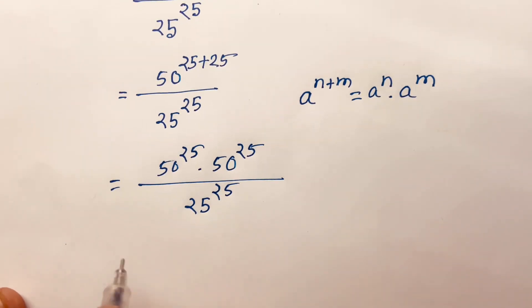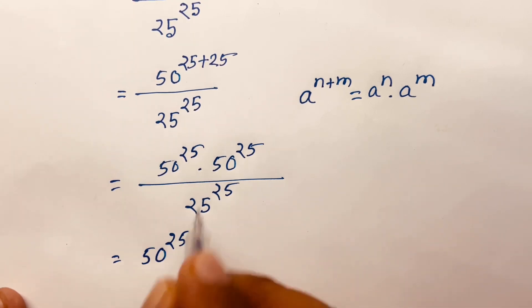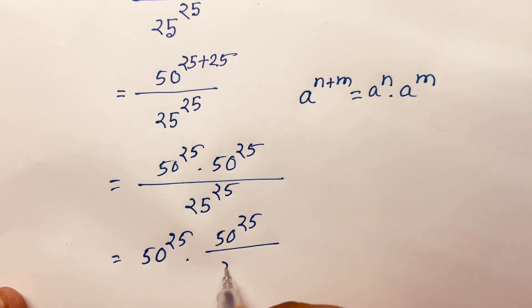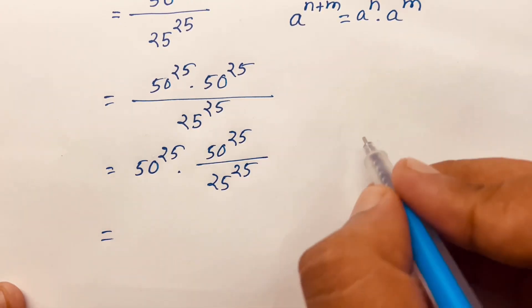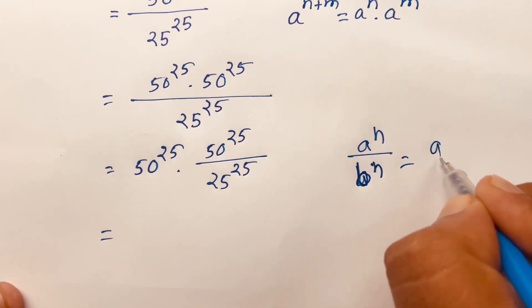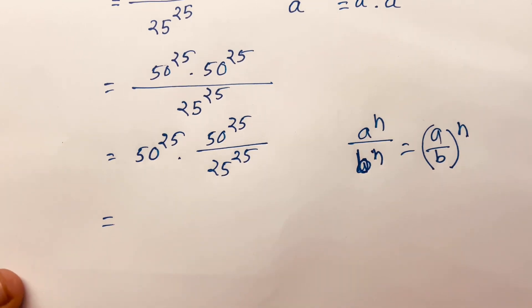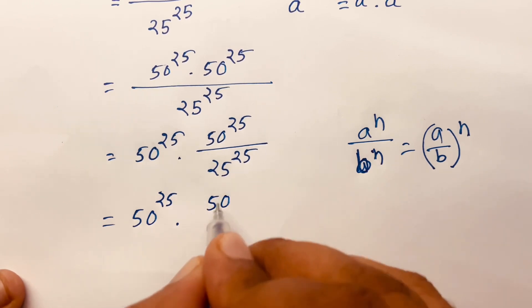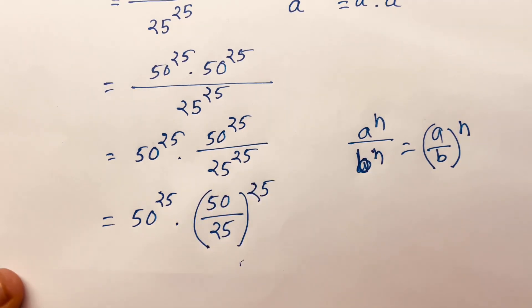So we have 50 to the power 25 times 50 to the power 25 over 25 to the power 25. We know the exponent law: a to the power n over b to the power n equals (a over b) to the power n. Since the exponents are the same, I can write 50 to the power 25 times (50 over 25) to the power 25.